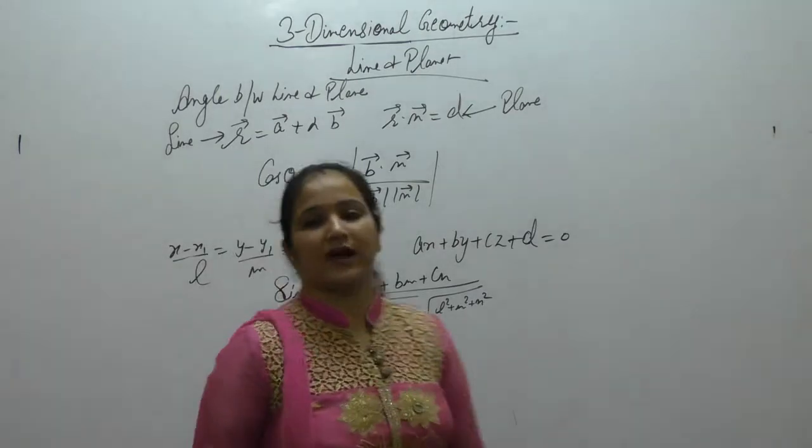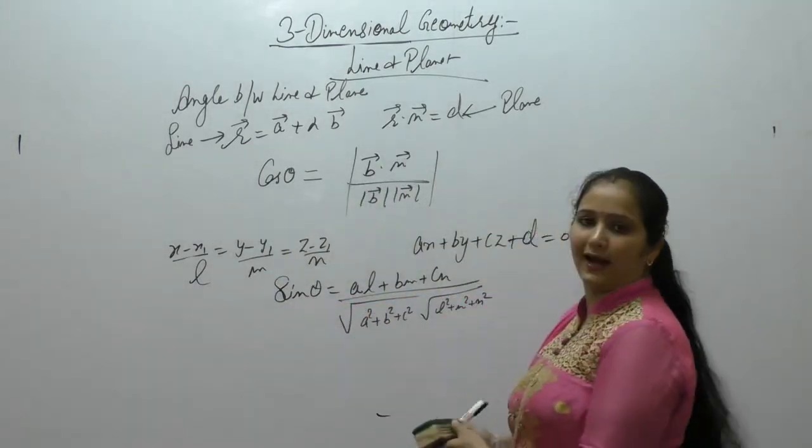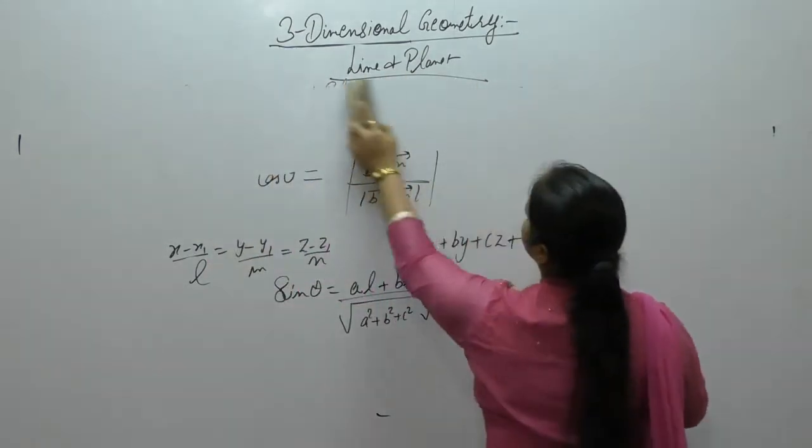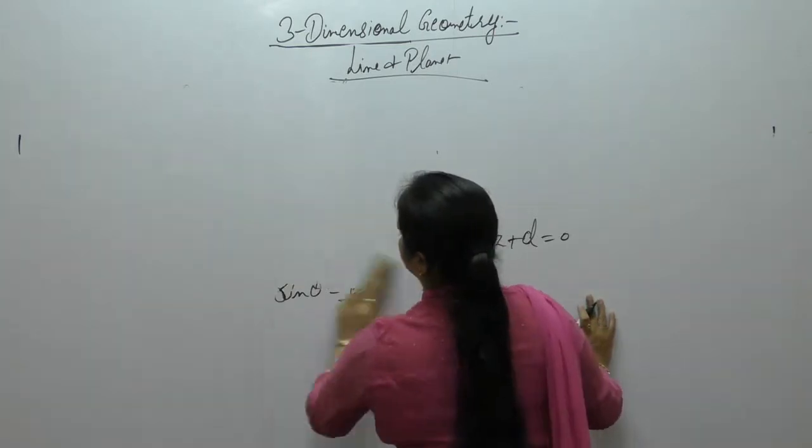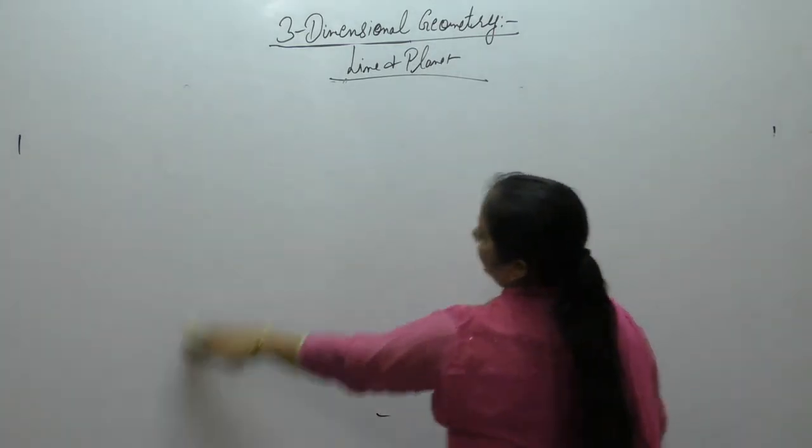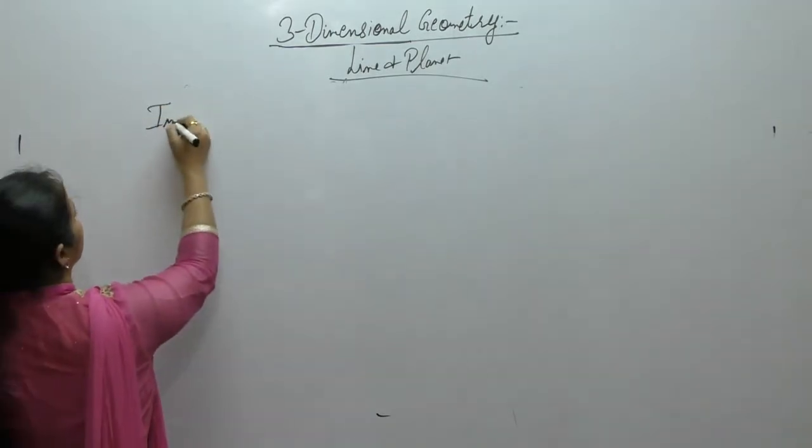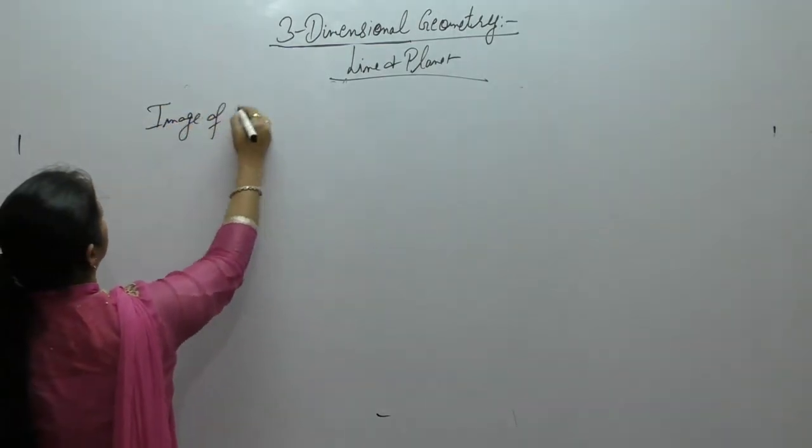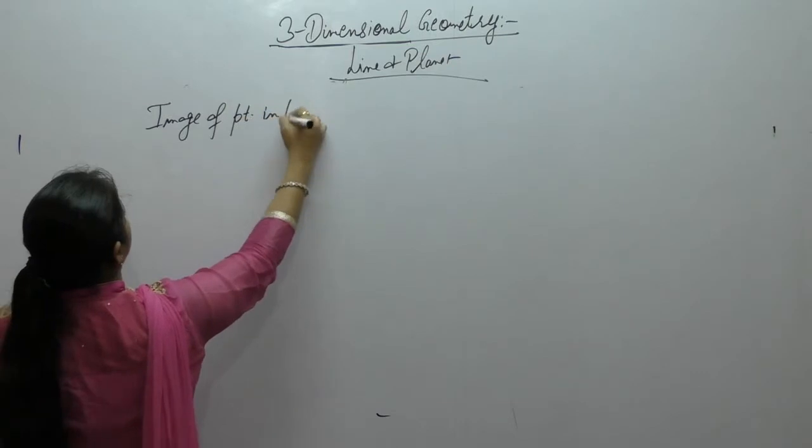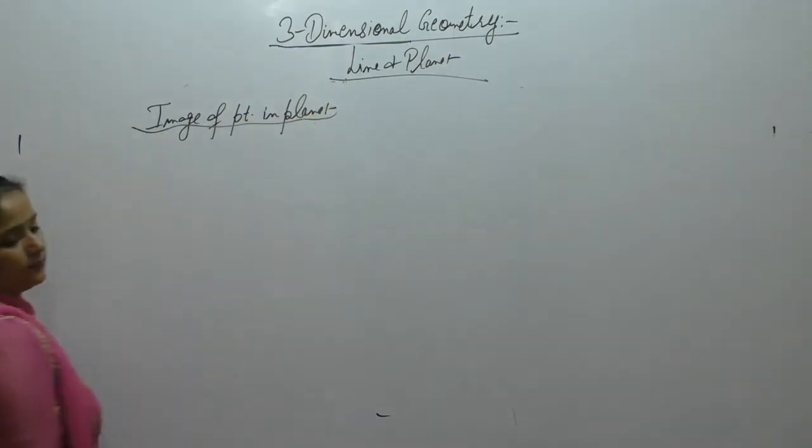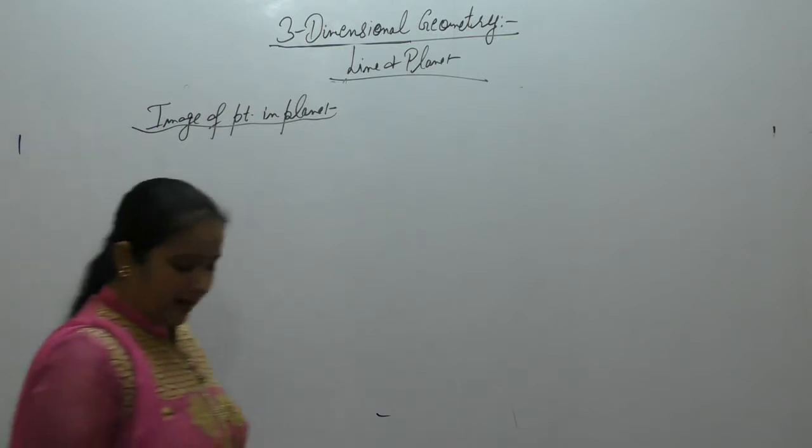So, this is to find the distance between a line and a plane and angle between a line and a plane. Now, the next is to find image of point in plane.